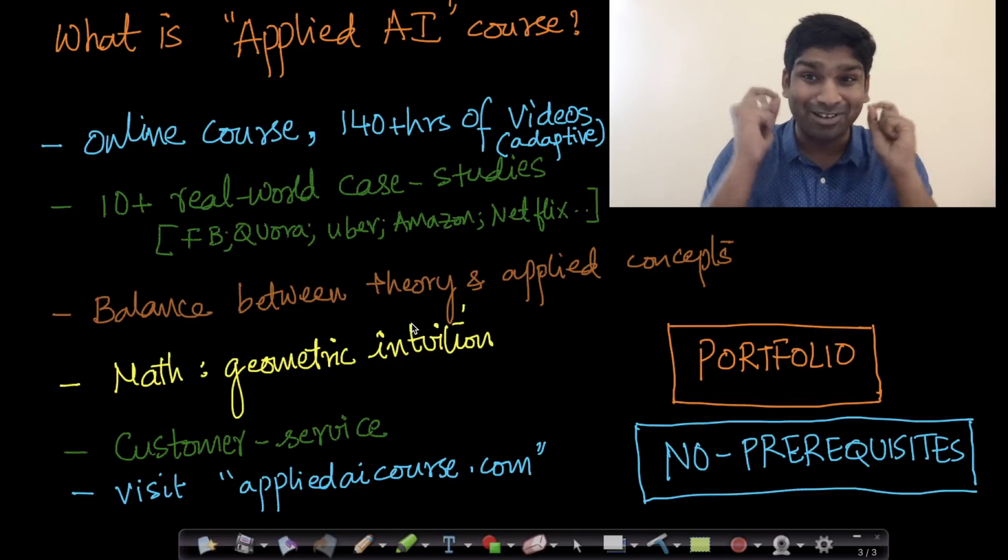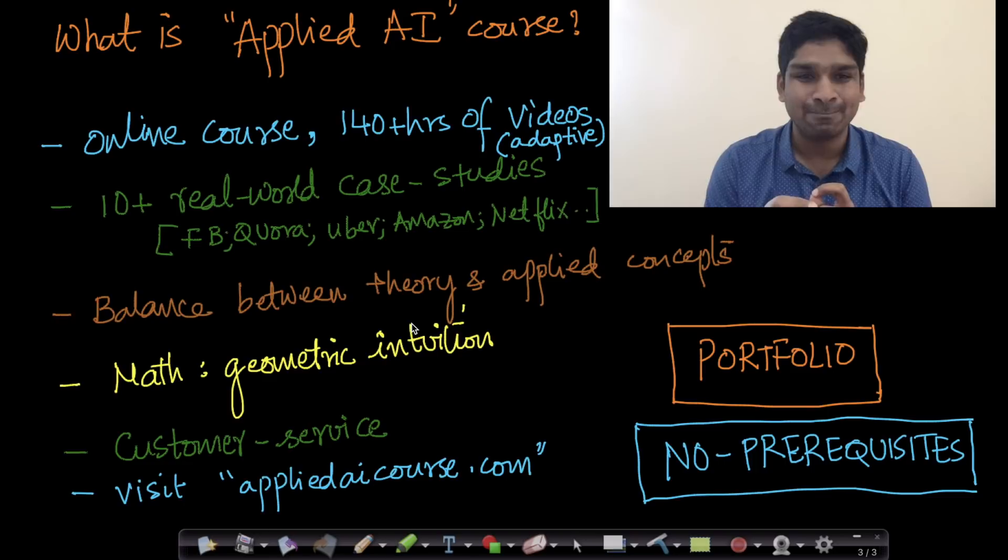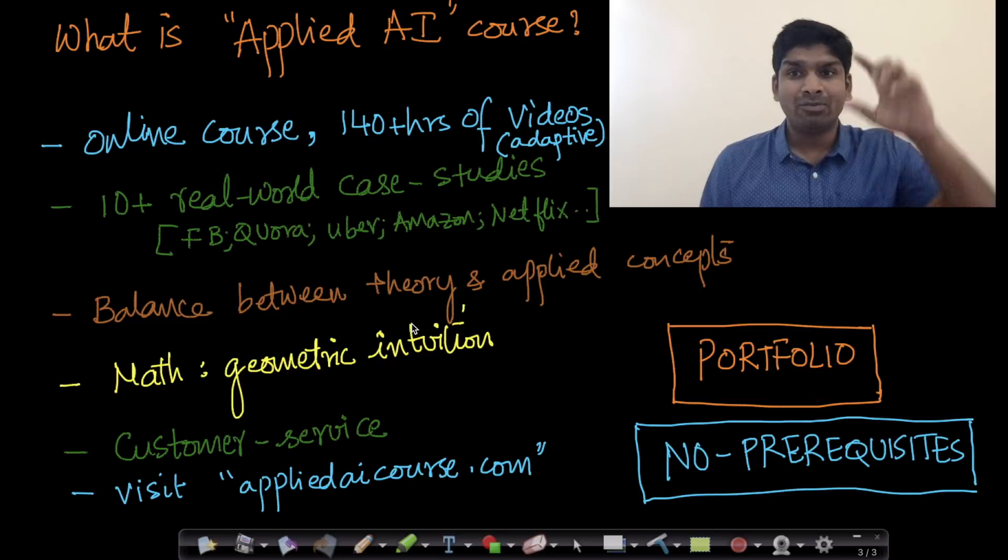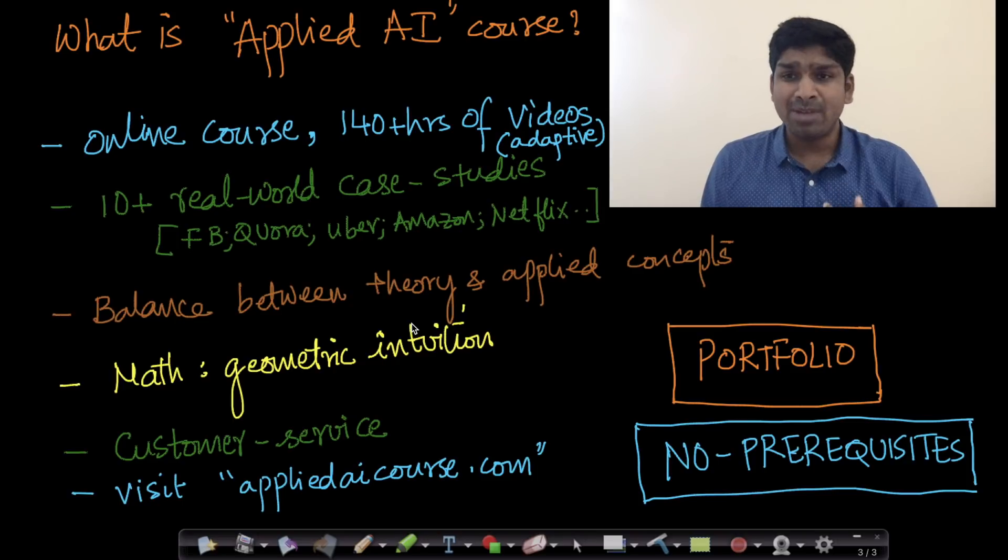In addition to all of this, we also have a terrific customer service. We have five engineers who are working full-time with us trying to resolve customer issues. For example, while watching a video, if you don't understand the concept or you don't understand the code snippet, you can just shoot an email to our team at team@appliedaicourse.com, and we will try and get back to you as soon as possible.